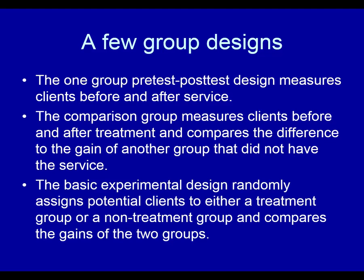The basic experimental design is one where two groups of people are randomly assigned to either a treatment group or a non-treatment group, and then you compare the gains of the two groups. The key that makes it superior to other designs is that people are randomly assigned, so individual differences tend to be cancelled out between groups because placement is strictly random.